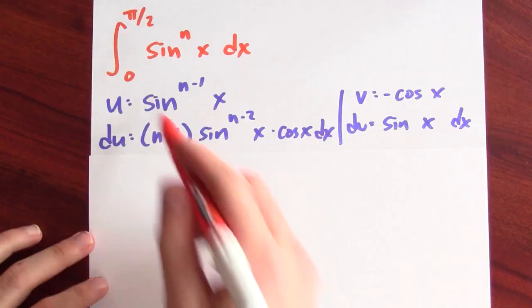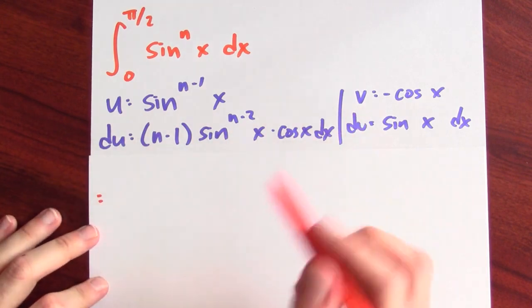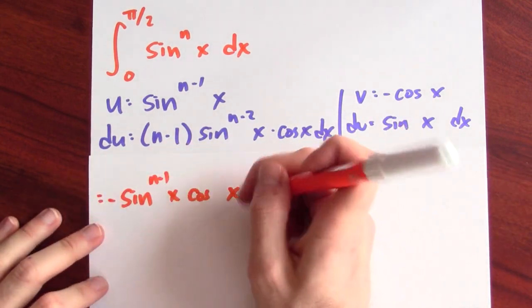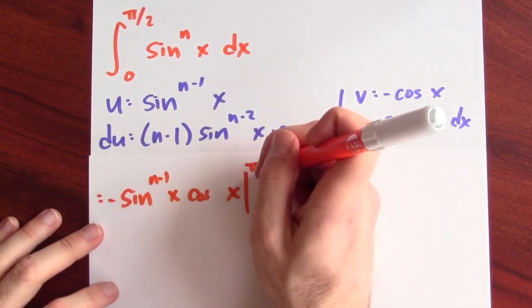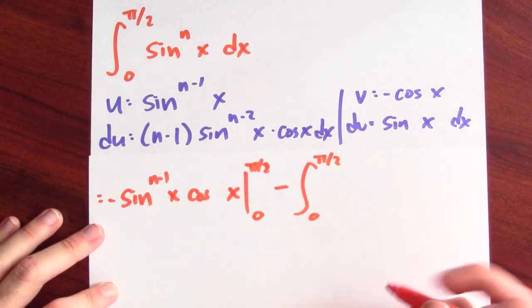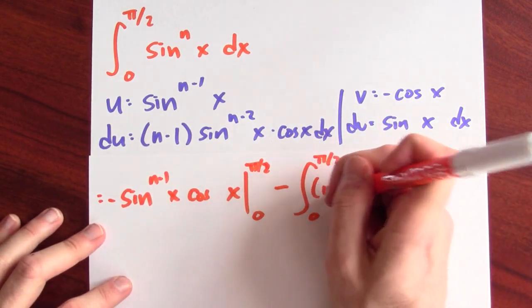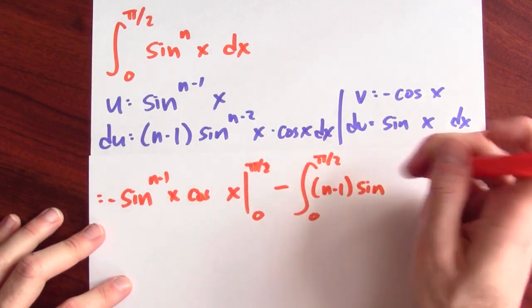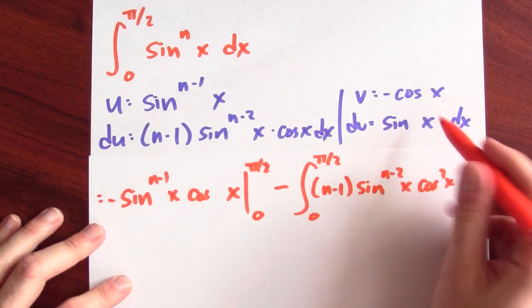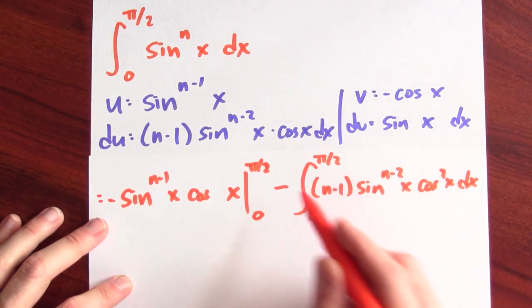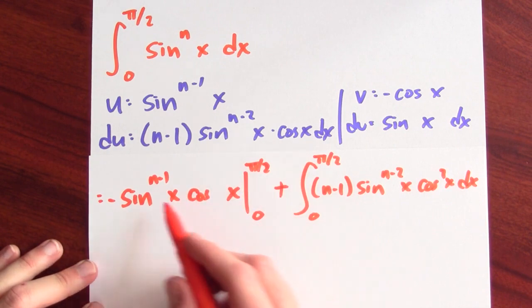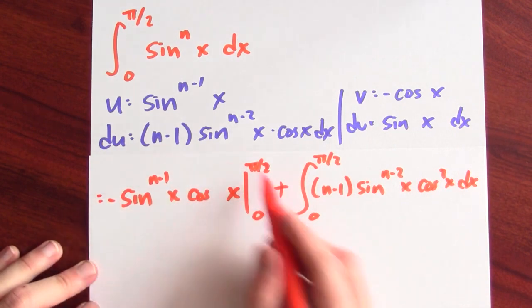Now we get a formula from parts. This integral is uv: sine to the n minus 1 times cosine with a minus sign, evaluated at pi over 2 and 0, minus the integral from 0 to pi over 2 of v du, which is n minus 1 times sine to the n minus 2 times cosine squared dx — with a plus sign from the minus on v. When I plug in pi over 2, that kills the cosine term. And when I plug in 0, that kills the sine term. So this boundary term is just 0.